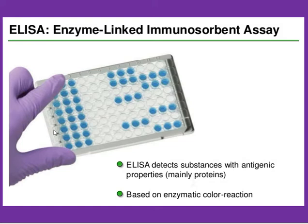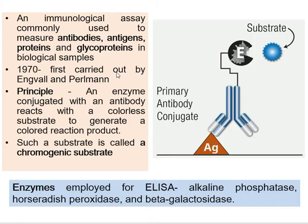This is the color reaction you get in ELISA. It is based on the principle of antigen-antibody interaction, because antigen-antibody interactions are highly specific. This is an immunological assay commonly used to measure antigens, antibodies, proteins, and glycoproteins in biological samples. It was first carried out in 1970 by Engwald and Perlman.